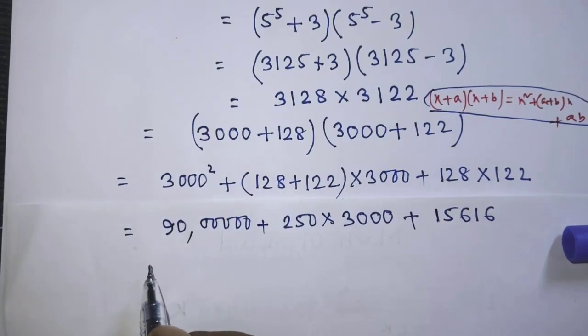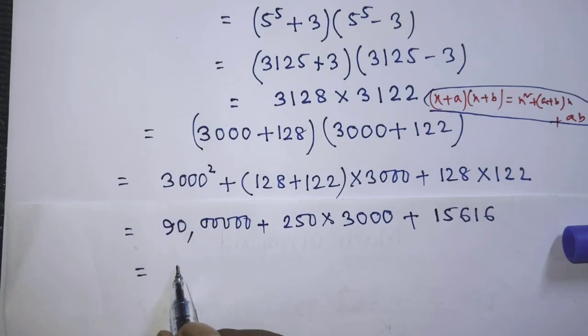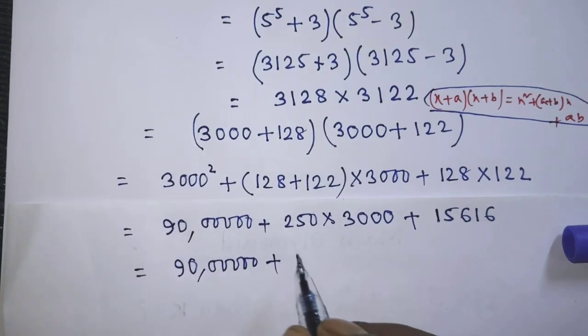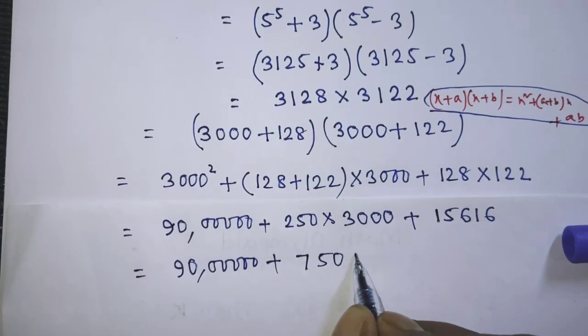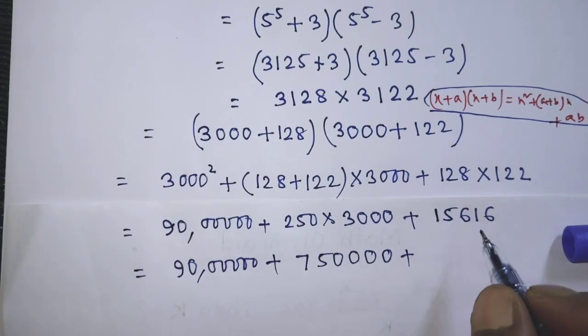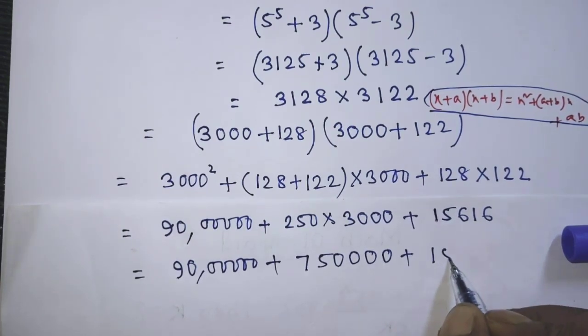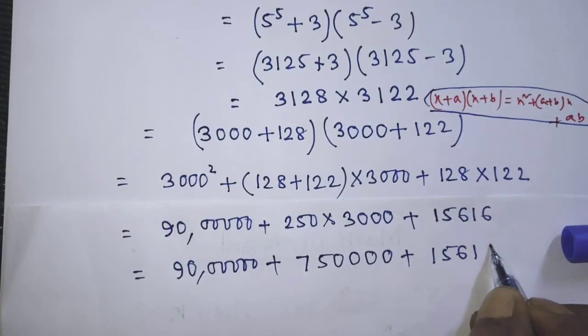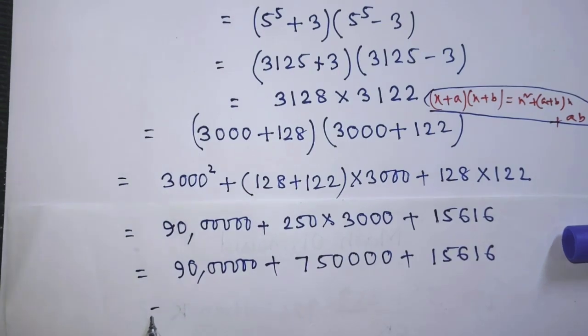After that, it will be 90 lakhs plus 7 lakhs 50 thousand plus 15 thousand 6 hundred and 16.